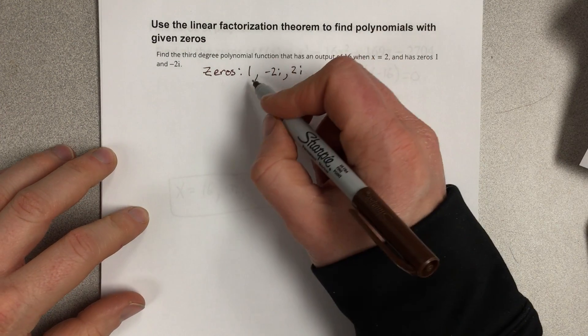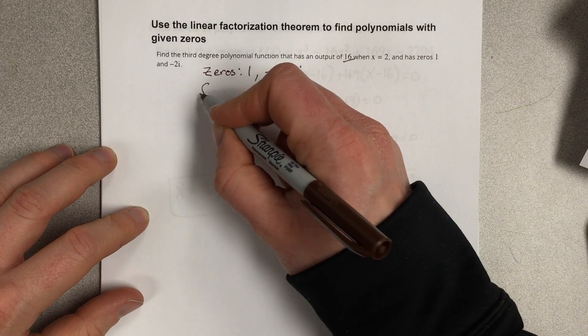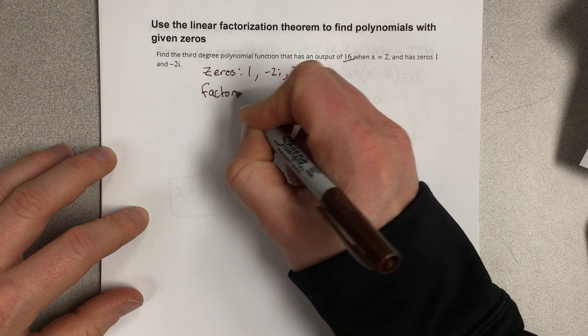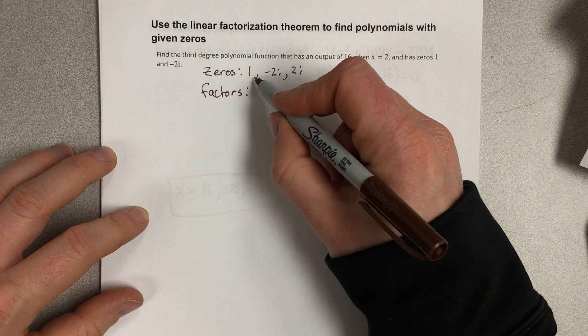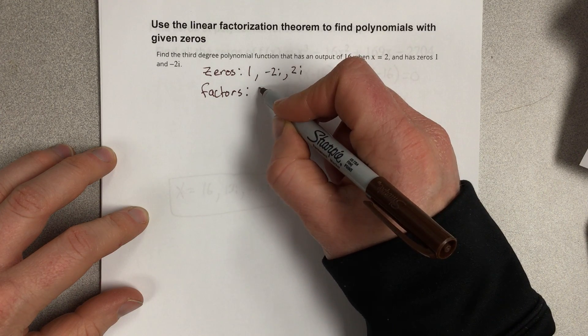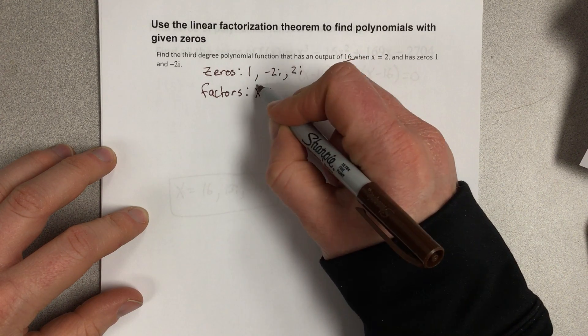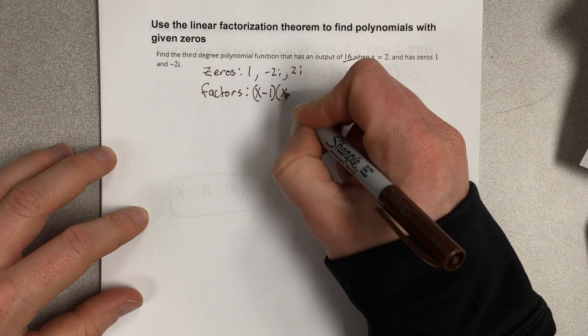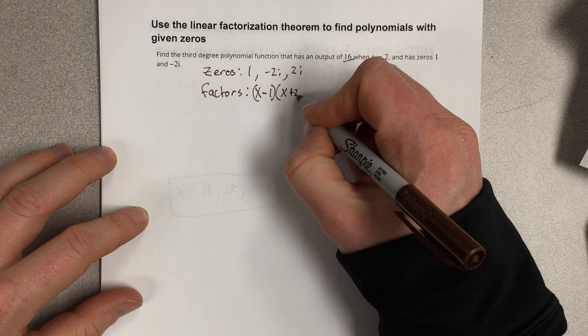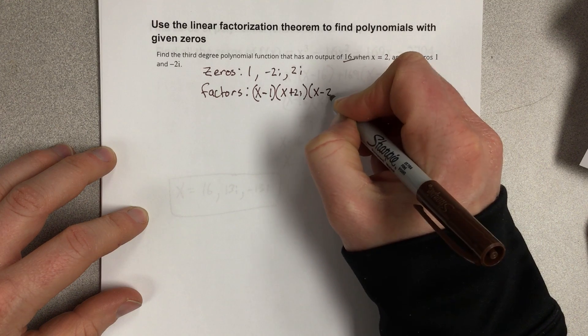So then our factors would be, if we write out our factors, our factors would be x minus 1, x plus 2i, and x minus 2i.